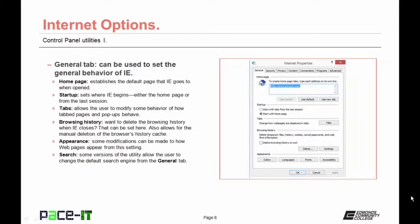The General tab sets the general behavior of Internet Explorer — from here you can set or see the home page, decide where IE begins (home page or last session), modify behavior of tab pages and popups, control cookies and browsing history (including deleting the browsing history on close or manually deleting caches), and make modifications to how web pages appear. Some versions of the Internet Options applet also have a section to set the default search engine.